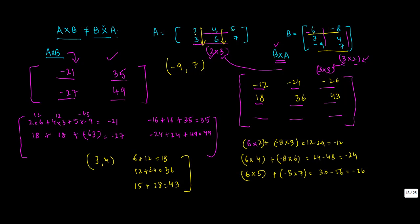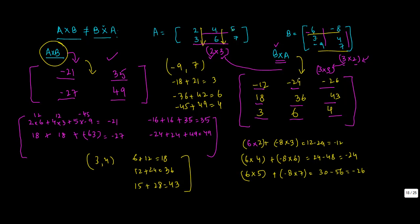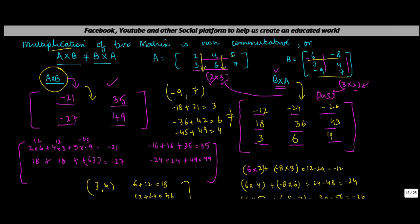For the third row using [-9, 7]: -9×2 + 7×3 = -18 + 21 = 3; -9×4 + 7×6 = -36 + 42 = 6; -9×5 + 7×7 = -45 + 49 = 4. Now if you notice, A×B and B×A are clearly not equal, so we conclude that multiplication of two matrices is non-commutative — A×B is not equal to B×A.